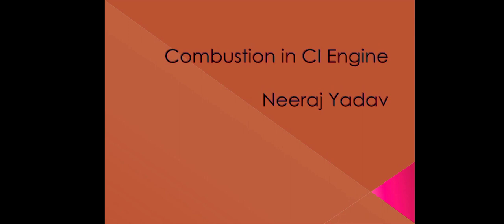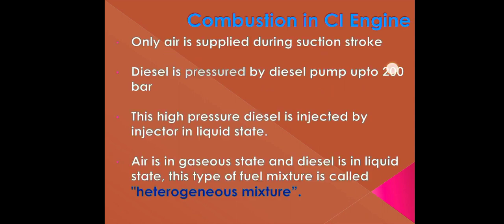Today's topic is combustion in CI engines. Combustion is a chemical process in which fuel burns in the presence of oxygen and produces heat and light. In the CI engine, only air is supplied during the suction stroke, and the air is compressed to attain high pressure and high temperature at the end of the compression stroke.